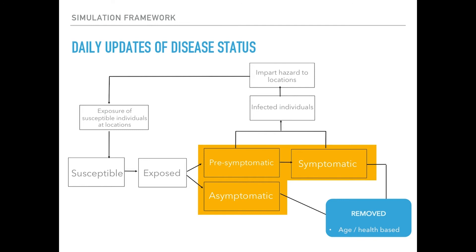Asymptomatic people carry on their lives as normal, visiting locations such as shops and schools, imparting hazard and increasing the exposure of others. After a period of time based on probability distributions, both asymptomatic and symptomatic people will be removed — either returning to the community (assuming people won't get COVID twice) or unfortunately dying — determined probabilistically based on their age and health condition.